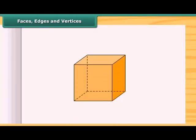Look at this cube. This is the face of a cube. This is the edge of the cube and this is the vertex of the cube. An edge is a line segment where the faces meet and the vertices are the points where the edges meet.